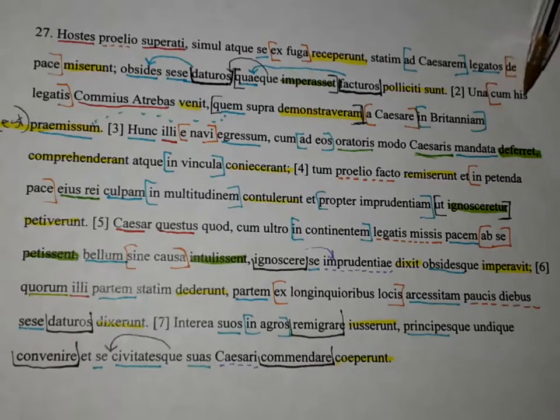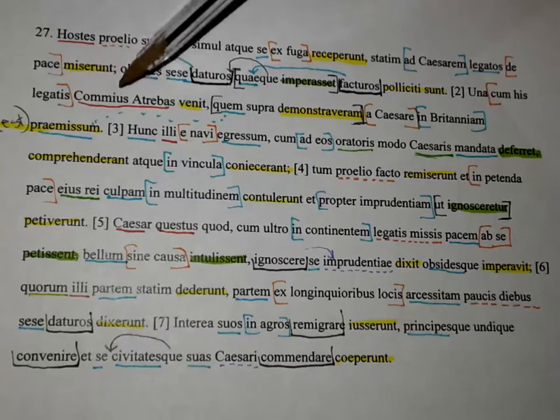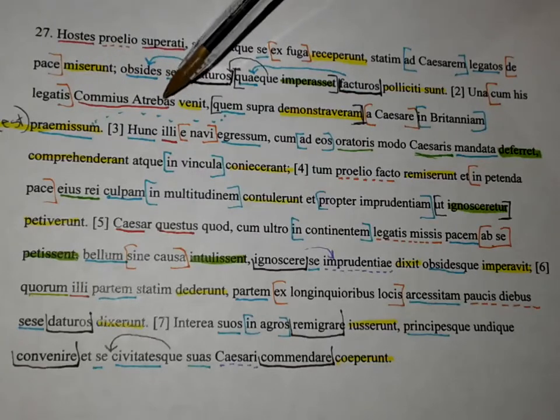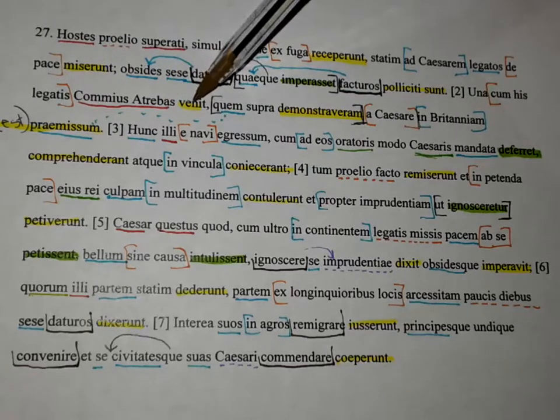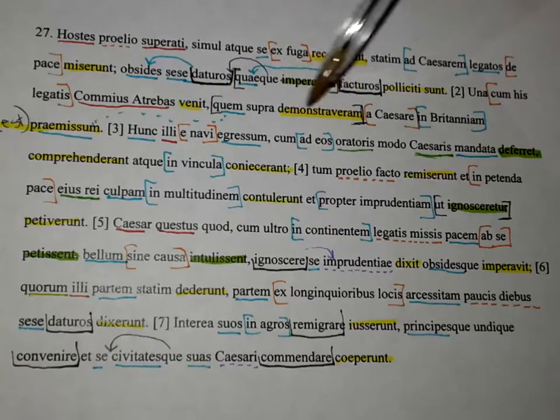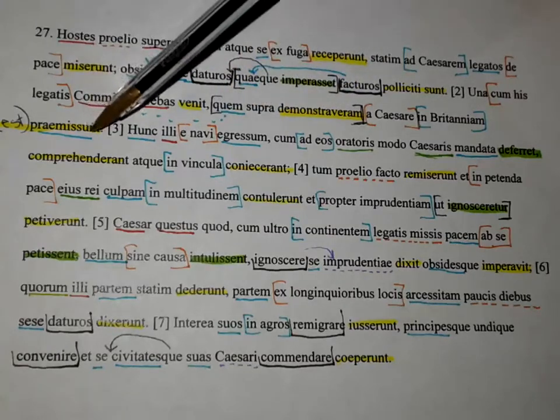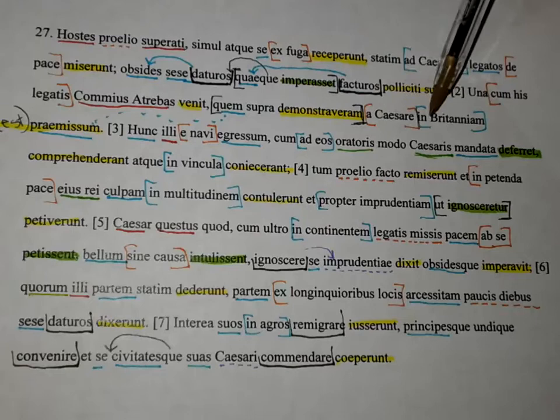Together with these ambassadors, Commius the Atrebatian came, whom I have mentioned above had been sent by Caesar into Britain.